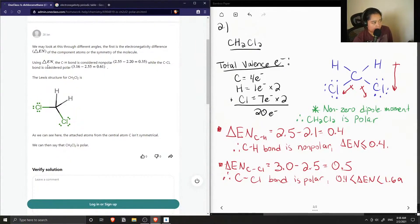Using the difference in electronegativity, the carbon-hydrogen bond is considered non-polar so 0.35 while the carbon-chlorine bond is considered polar.